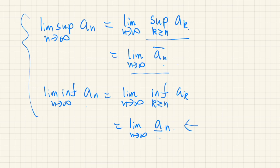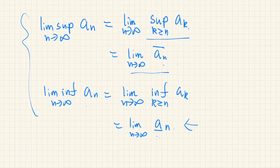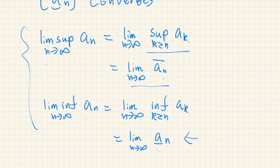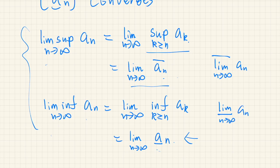The only assumption needed is that the sequence a_n is bounded. So even if the sequence does not converge to any finite value, we can still define limit superior and limit inferior. By the way, in some math books, limit superior is written as lim with an upper bar, and limit inferior is written as lim with a lower bar. These are just different notations for the same thing.